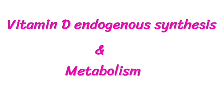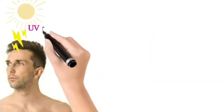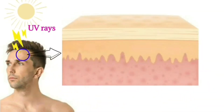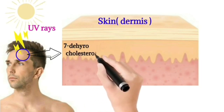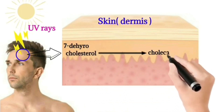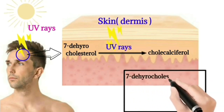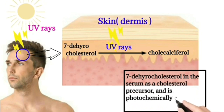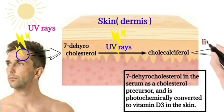Vitamin D endogenous synthesis begins when our skin is exposed to sunlight. The ultraviolet rays from the sun act on the dermis, where 7-dehydrocholesterol — a serum cholesterol precursor — is photochemically converted into cholecalciferol.